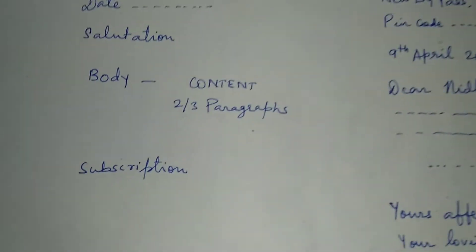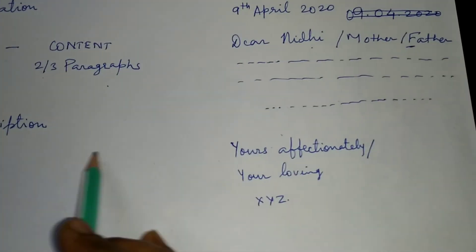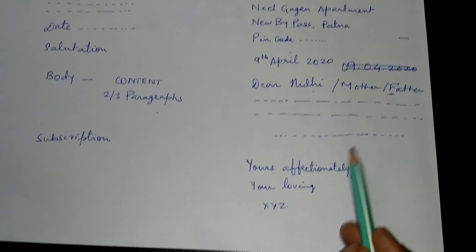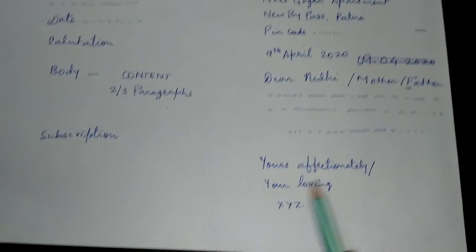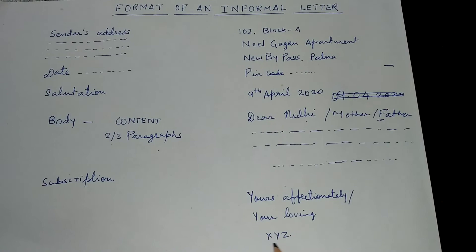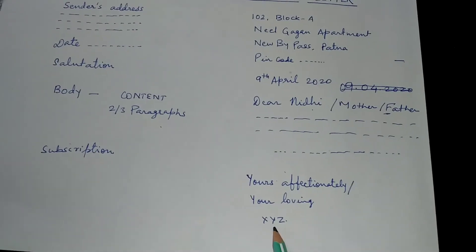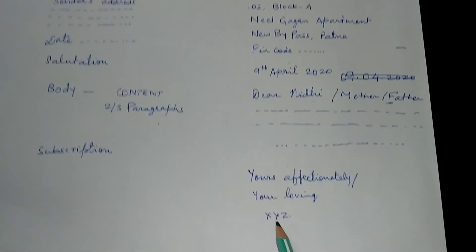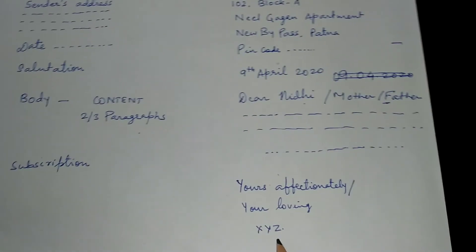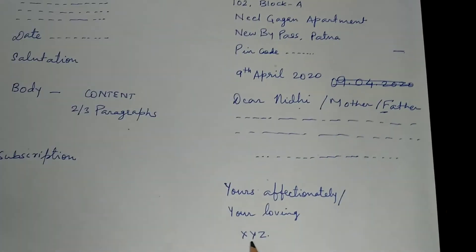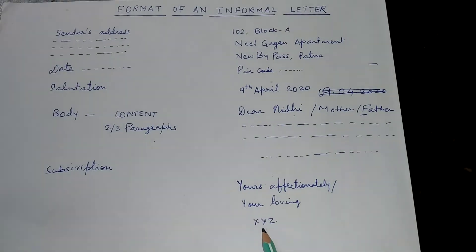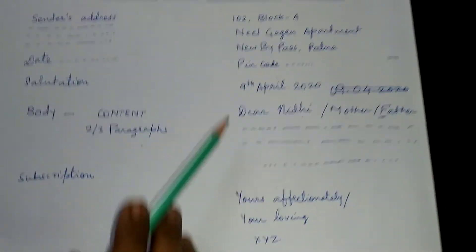Then comes the subscription. After completing your letter, you will write 'Yours affectionately' or 'Your loving friend,' depending on to whom you are writing. Then the person writing the letter puts his or her name. In the question, it will say that you are Nidhi, or Nilesh, or Raman. You will use that name given in the question — not your real name — to sign the letter.